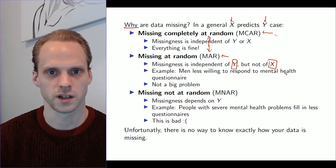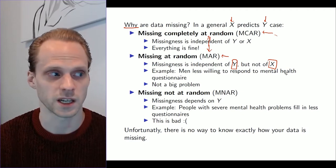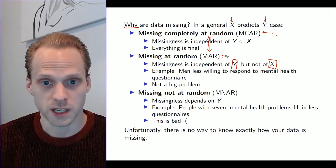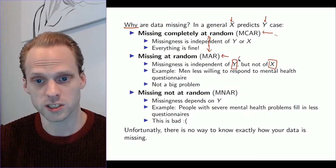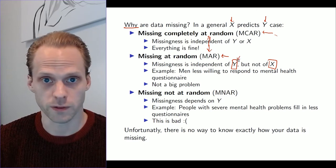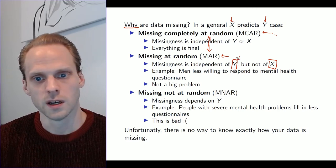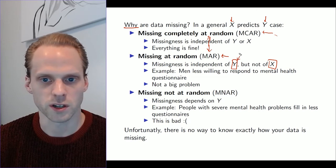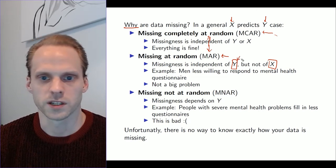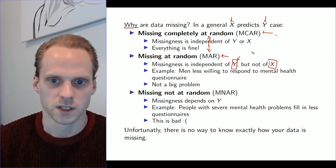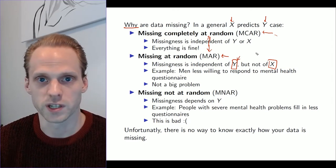Or maybe you have a planned missingness design, so the missingness is a function of the design and not the question you would have given. If you have missing at random, things are still good because your missingness does not depend on the answer you would have given. It doesn't mean you see a question and don't want to answer it. It's more like you don't want to answer it in general, but not because you're afraid what people do if they see your response.